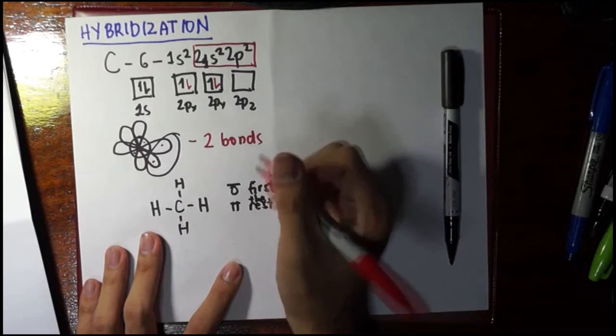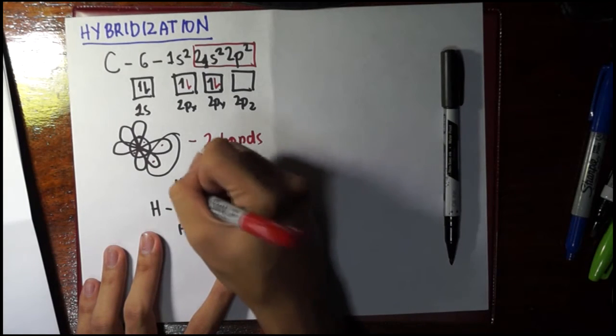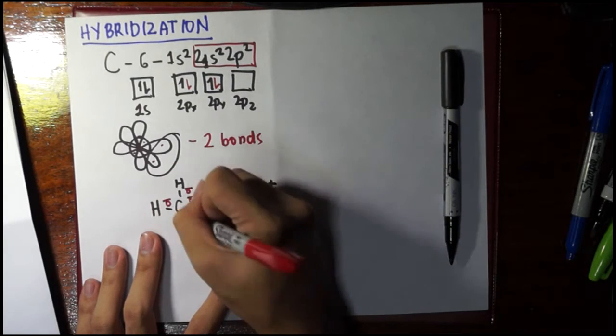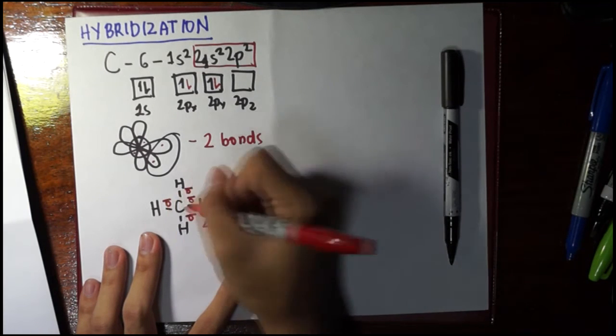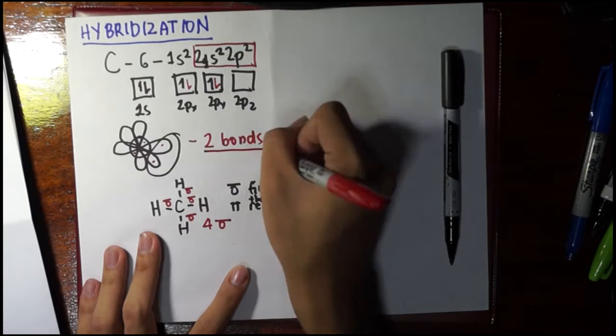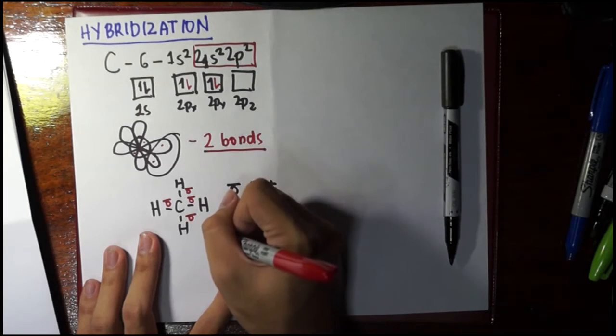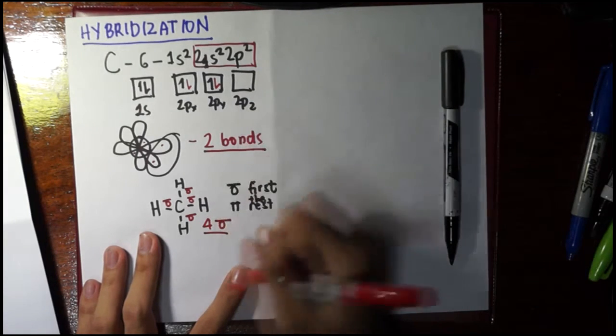Well, since all of these are single bonds, they should automatically all be sigma bonds. So here, we have four sigma bonds, and this is carbon at the middle. So if we explained it like this, but this one is not consistent, then there was a problem.